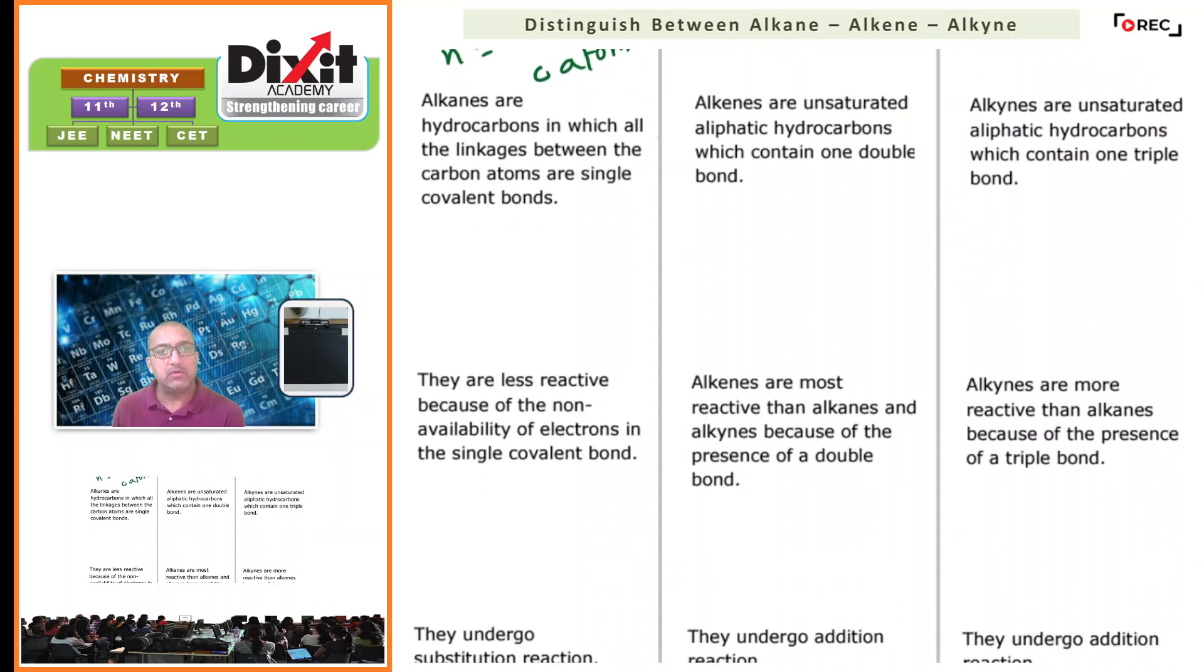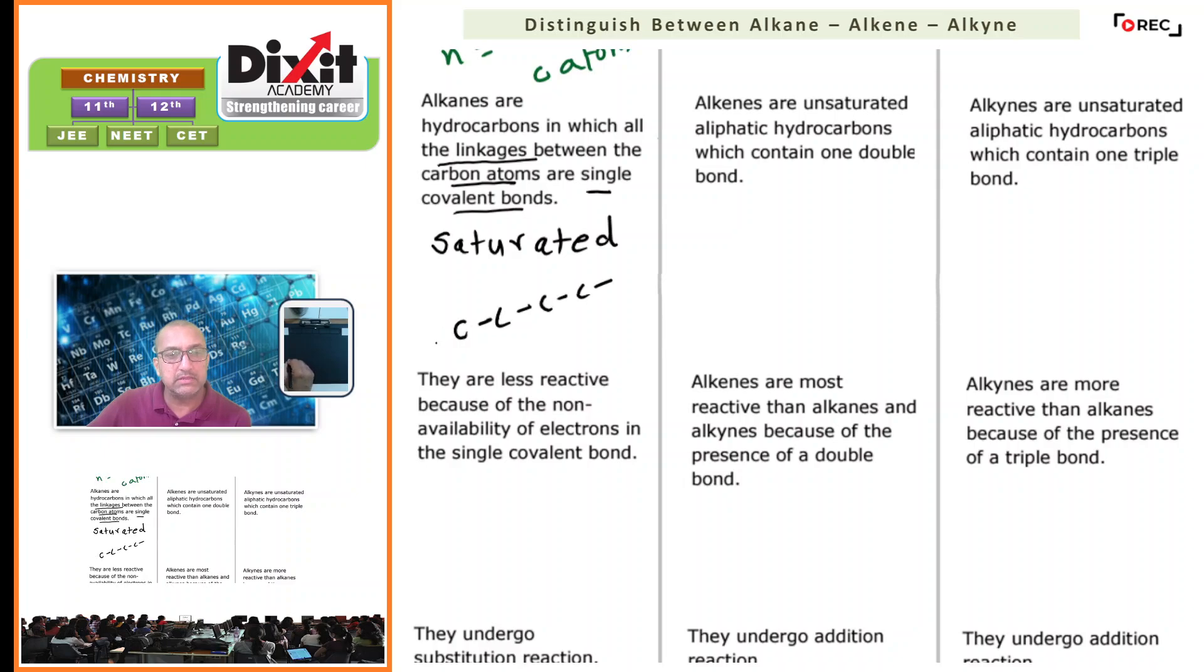Alkanes are hydrocarbons in which all the linkages between carbon atoms are single covalent bonds. As we have seen in the definition, alkanes are saturated hydrocarbons. Saturated hydrocarbons are those in which all the valencies of carbon atoms are satisfied with single covalent bonds.